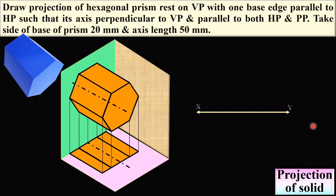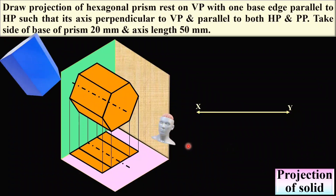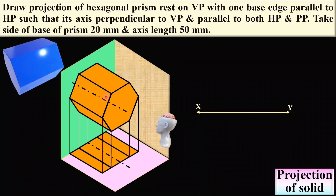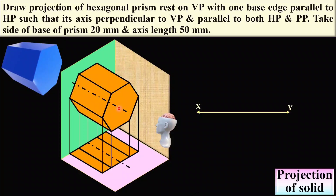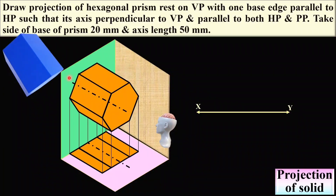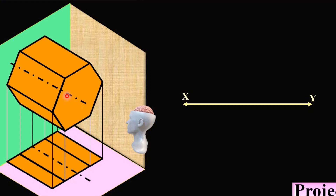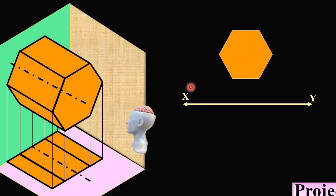First of all, draw the reference line XY. Next, start with the front view because the true shape of the base can be seen in the front view. Draw the front view and give the names to the corners: A, B, C, D, E, F — you can follow in anticlockwise or clockwise direction.